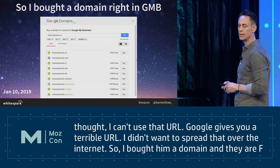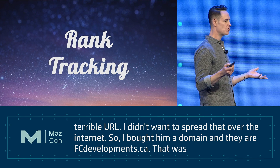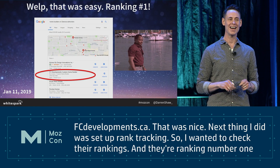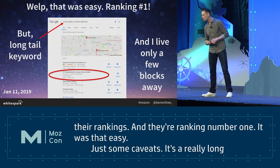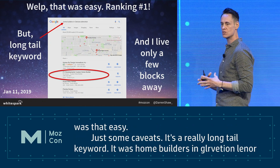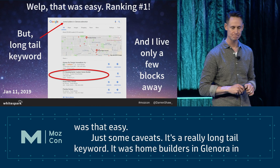Next I set up rank tracking to check their rankings. I created their listing and they were already ranking number one - it was that easy. Some caveats: it was a really long-tail keyword - 'home builders in Glenora Edmonton,' which is pretty obscure - and I also live just a couple blocks away from them. Proximity in local search is a huge factor, so since I was close to them and it was long-tail, Google showed this relevant nearby business.